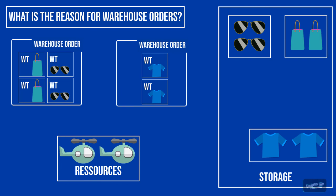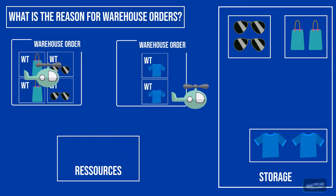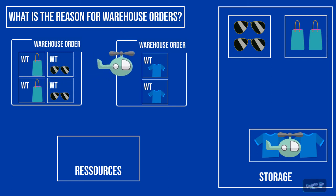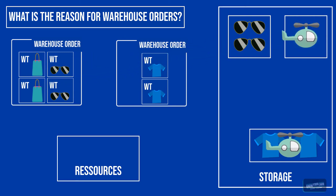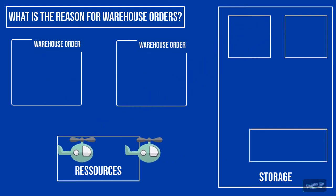If warehouse tasks are bundled into a warehouse order, the EWM optimizes all the tasks in that order so the user takes the least steps possible to pick all items. If there were no optimization, the user would walk crisscross through the warehouse and it would take forever to complete one delivery.